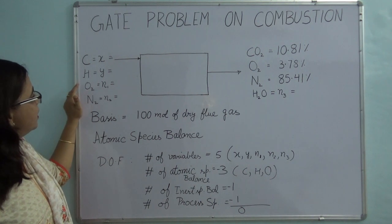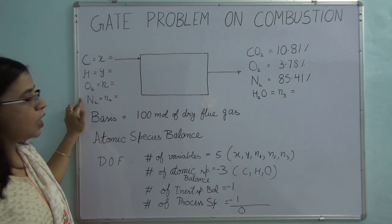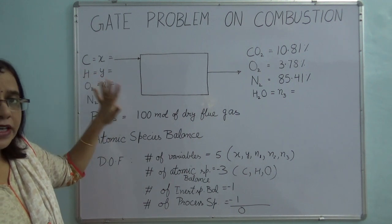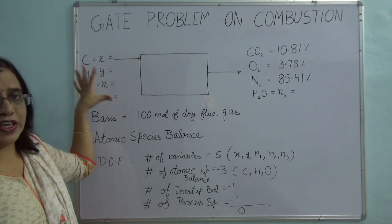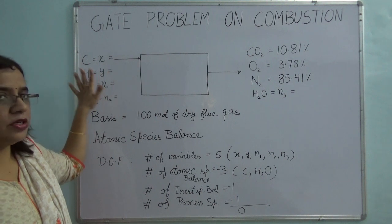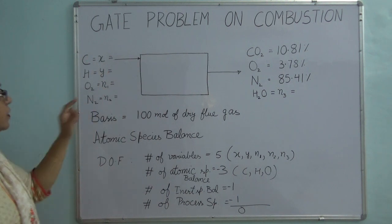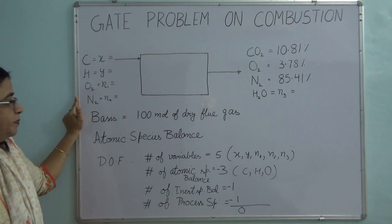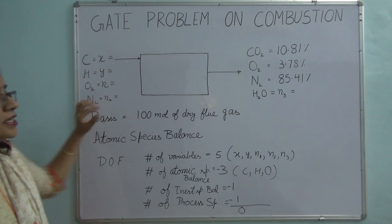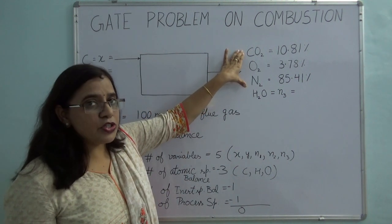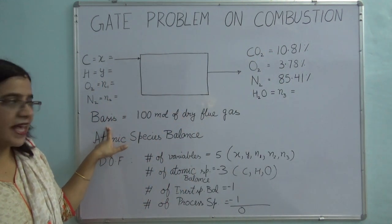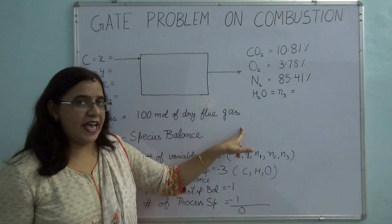The question asks you to find out the percentage excess of air used and the ratio of carbon to hydrogen in the fuel. With this information, we are going to solve this problem. The first step is to select the basis. Since we know the composition of the dry flue gases, we will take our basis as 100 moles of dry flue gas.